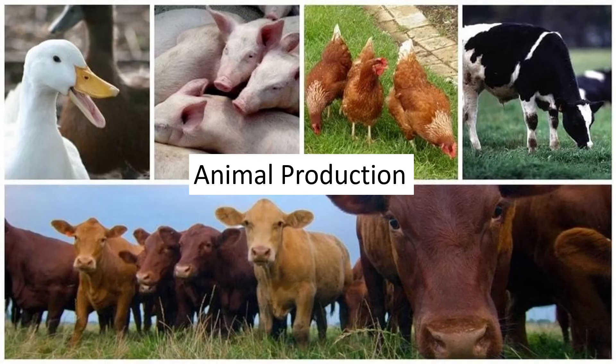The same applies to pigs — we want them to gain weight to be sold. With cattle, the goal is either producing enough milk to make a profit for the farmer, or gaining enough weight to be sold to the feedlot or other farmers. The main idea is allowing the animals to grow as much as possible so the farmer can make as much money as possible.